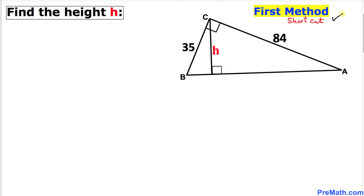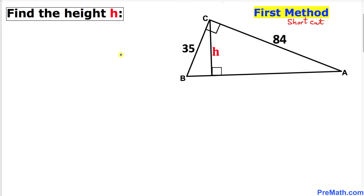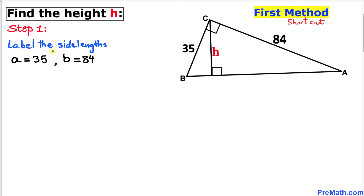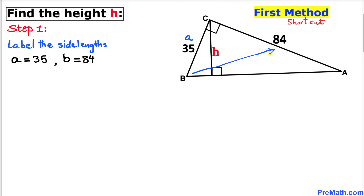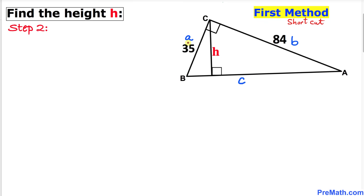This is going to be a shortcut method. Let's get started with the solution. First, let's label our side lengths. The point A is opposite to lowercase side a, opposite to vertex B is lowercase b, and opposite to vertex C is lowercase c.